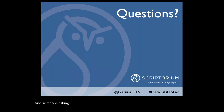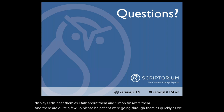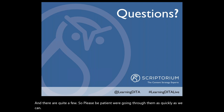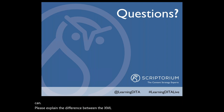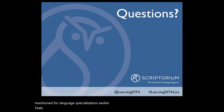Someone asked if they can see everyone's questions — Alan clarifies that questions are not displayed to all attendees; you'll just hear them as Alan reads them and Simon answers. Alan asks for patience as there are many questions. Another question: Please explain the difference between the xml:lang tag and the metadata element for language. Simon clarifies there may have been confusion — they are actually the same thing. The xml:lang attribute is itself the metadata; it is both metadata and the way you specify what language is used in the topic.